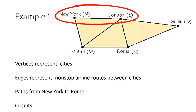However, there is not a non-stop airline route from New York to Berlin since there is no single edge connecting New York to Berlin. Let's list a few of the paths from New York to Rome.